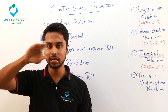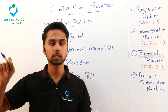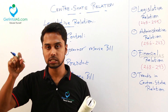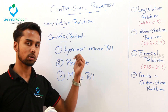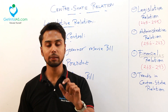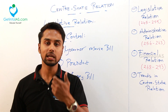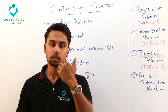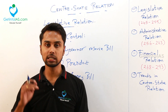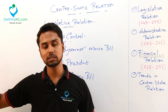First we will go with the legislative relations. What is this legislative relation? Legislature means making laws — we all know that. So we are going to see what is the law-making relation between center and state. Before studying that, you should know about the territorial extent. At center there is parliament, and at the state we have the state legislative assembly. What is the territorial jurisdiction of parliament?